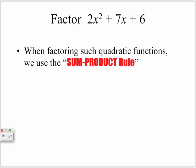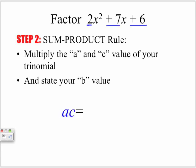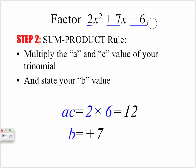When factoring such quadratic functions, we use something called the sum-product rule. We're going to multiply our A and C values of our trinomial, and then we're going to state our B value. So A times C is 2 multiplied by 6, giving us a value of 12. And our B value is positive 7. We use the sum-product rule here just as we used it when factoring trinomials where the A value is equal to 1.